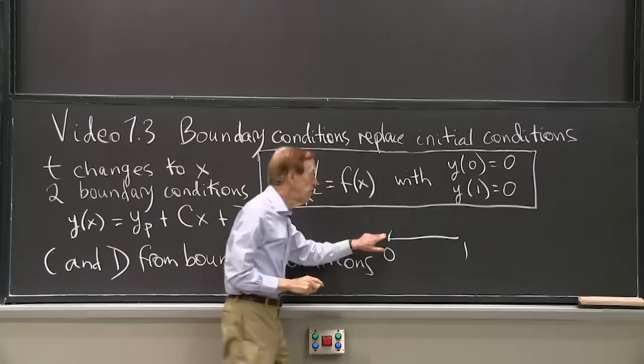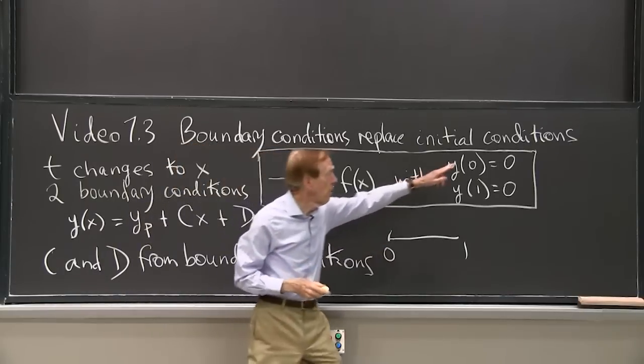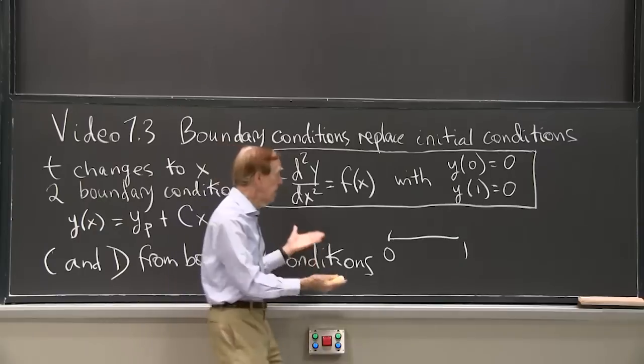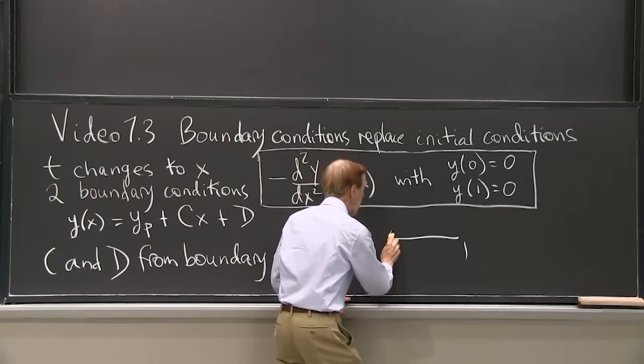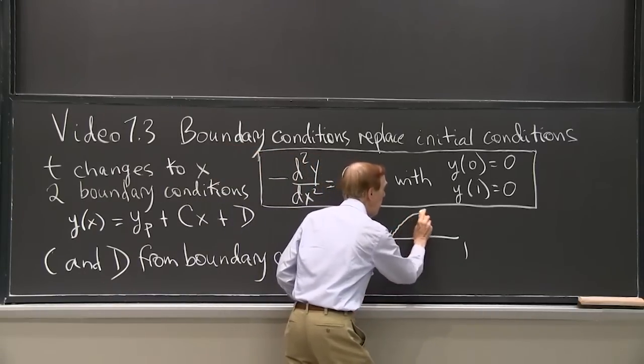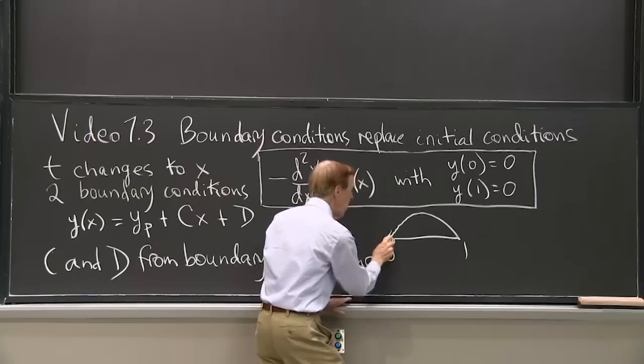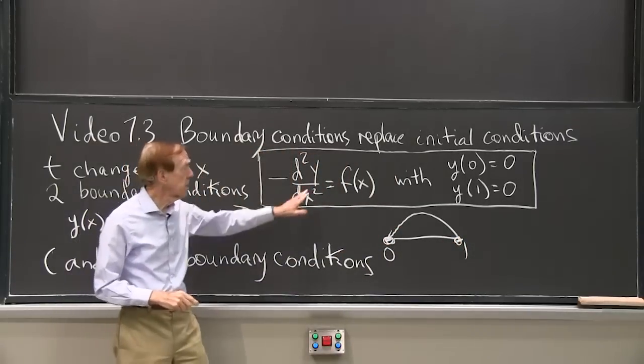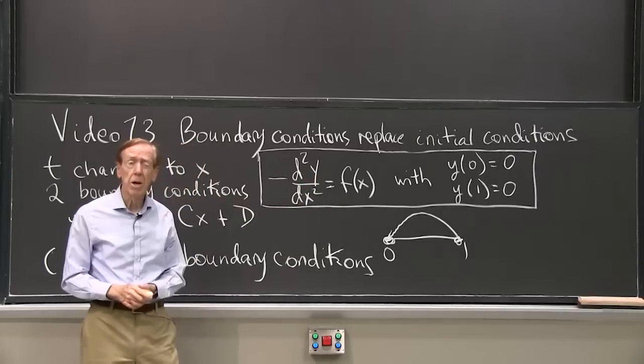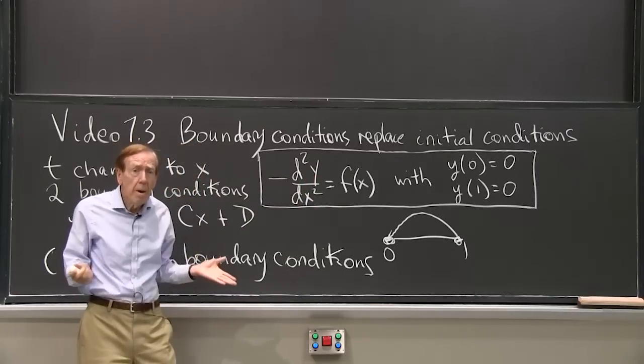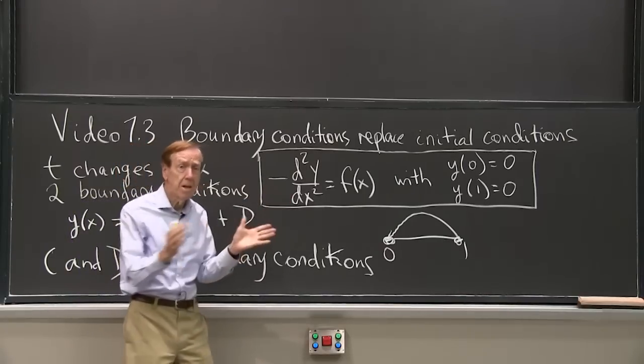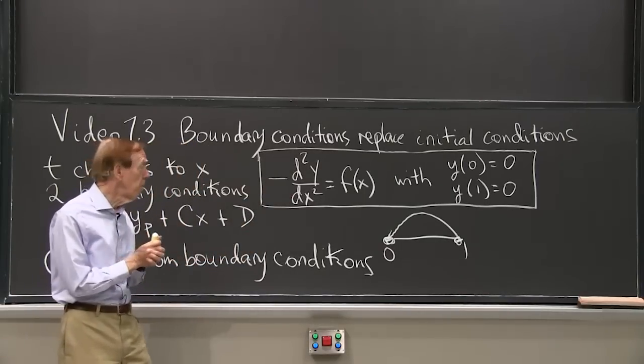At 0, let me take 0 for the two boundary conditions. So my solution somehow does something like this - it's maybe up and back down. So it's 0 there, 0 there. And in between, it solves the differential equation. Not a big difference, but you'll see that it's an entirely new type of problem.